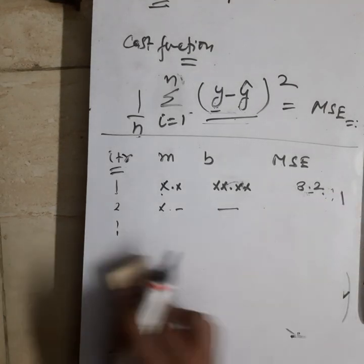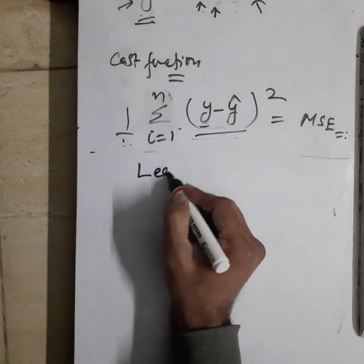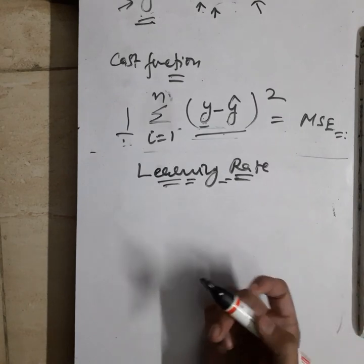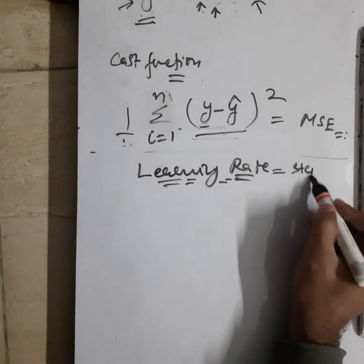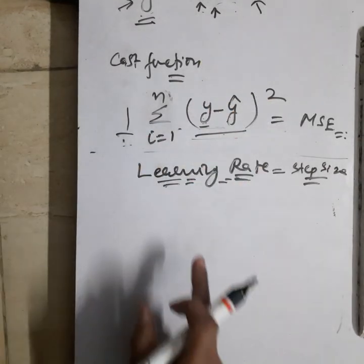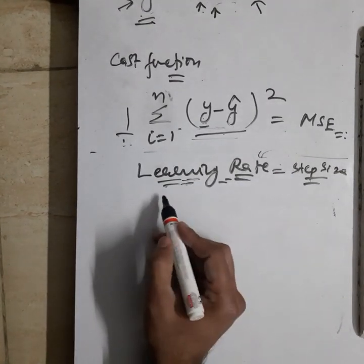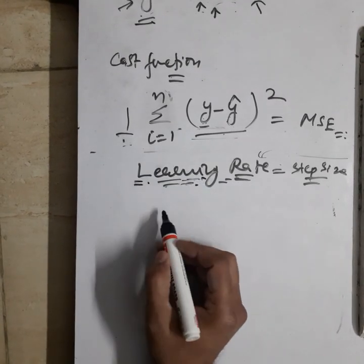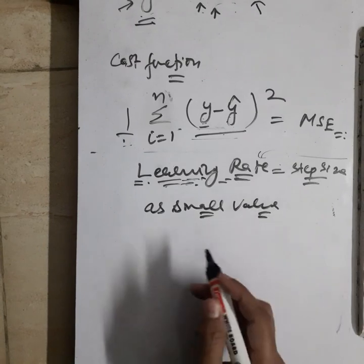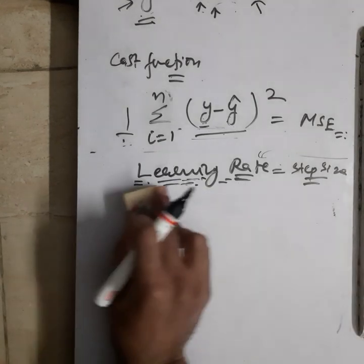One more thing I want to quickly introduce in this video is the concept of learning rate. To relate learning rate to our real life example, the learning rate is equal to the step size — like what step size that person is taking when coming from the top of the hill to the bottom. There is always a recommendation that the learning rate should be a small value.